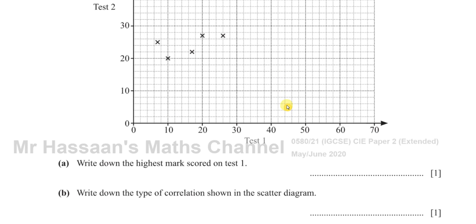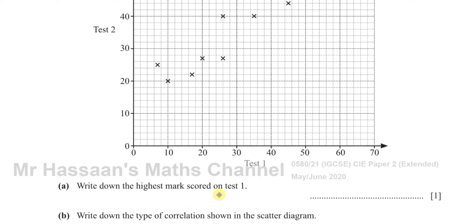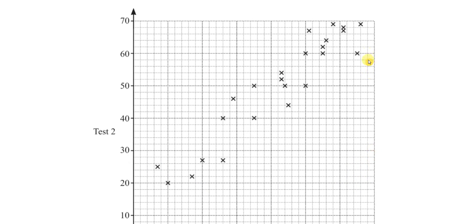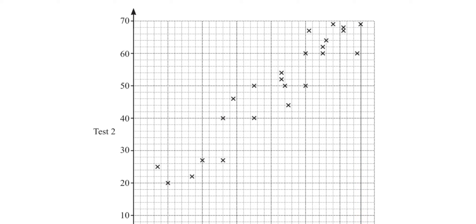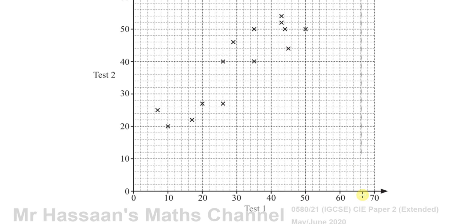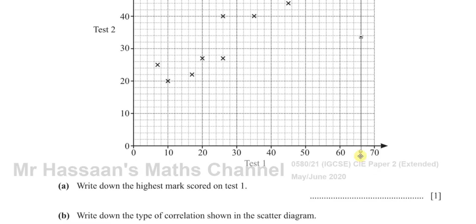They're asking us now to find the highest score or the highest mark scored on test 1. Test 1 is this x-axis, so we've got to look for the highest score on the x-axis, which is this mark over here. If we follow where this goes down onto the x-axis with a thin line, we can then work out exactly where it goes down to. It looks like 66 to me because each of these are two units: 62, 64, 66, 68, 70.